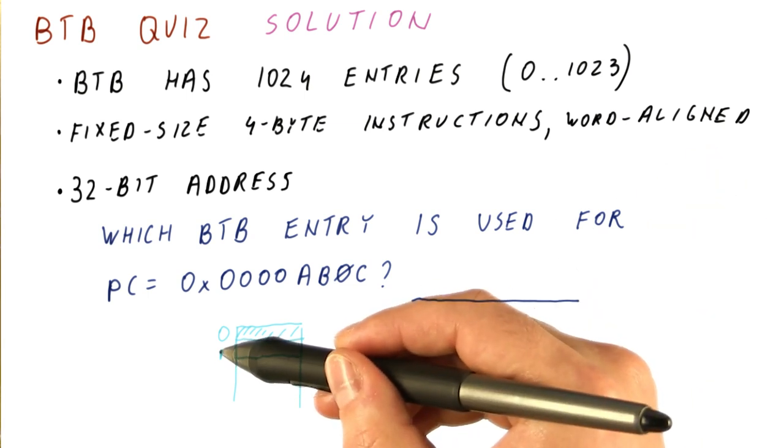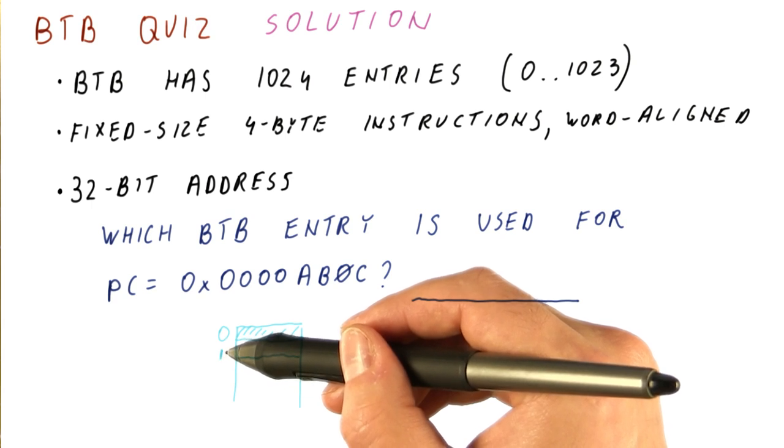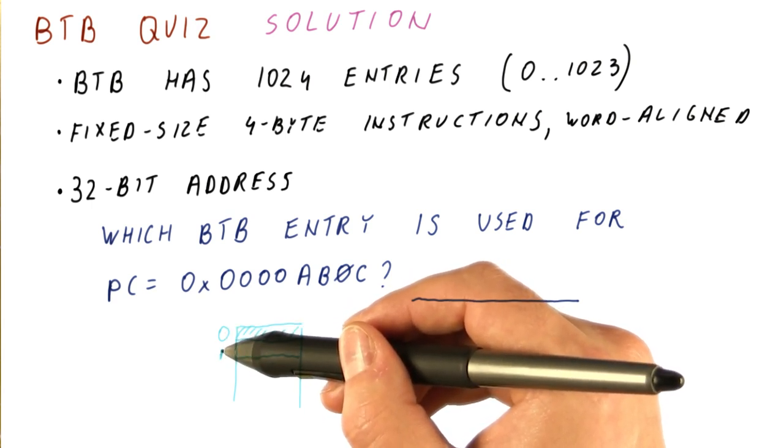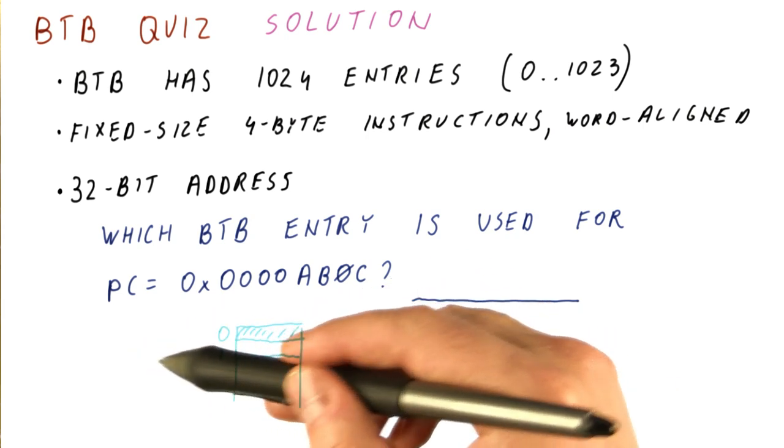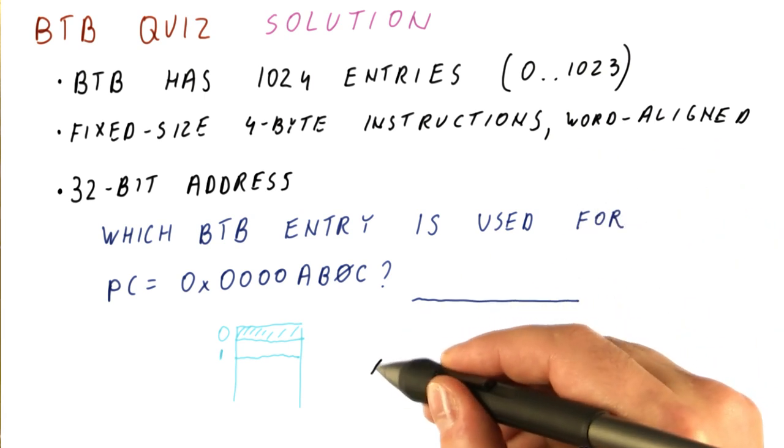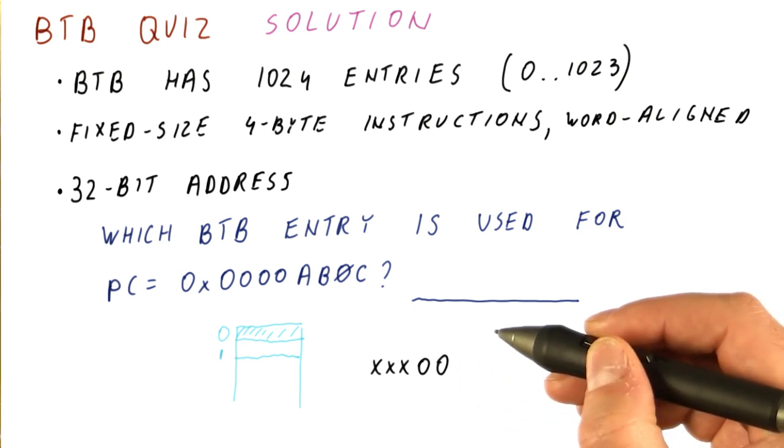As we said, addresses such as all zeros and then just one are not possible. Basically all addresses need to be not only even but also divisible by four. So if you take the lowermost bits, that means the only possible instruction addresses are of the form something, something, something, and then the least significant two bits are zero.